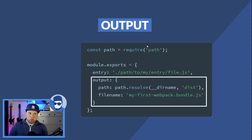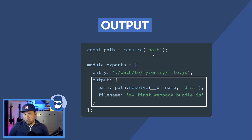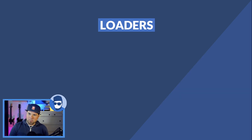Output tells Webpack where to store the generated bundles — relatively simple. In Webpack 4 and 5 you don't even need to configure this because it has very sensible defaults: as long as you use index.js in the source folder and dist as the output folder. But you can also configure this, and there's a lot more to it.